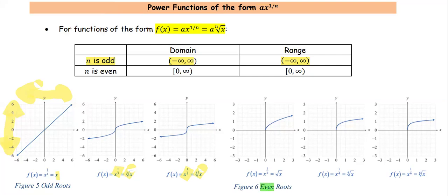For the even root — x to the 1/2, which is the square root; x to the 1/4, the fourth root; x to the 1/6, the sixth root — with the restriction of an even index, the input must be a non-negative number. So the domain is any x greater than or equal to 0, or from 0 to positive infinity. The range is also any number from 0 to infinity.